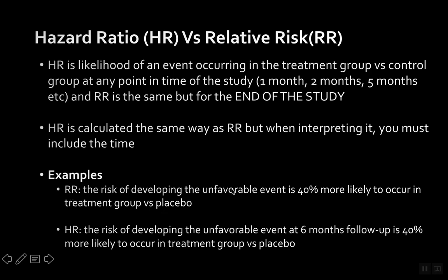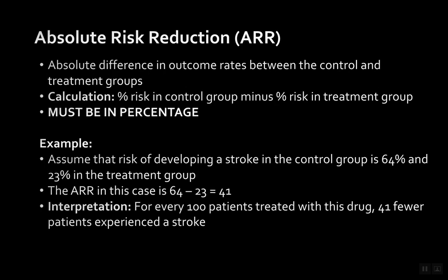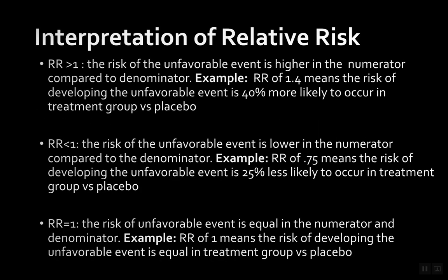The calculation is the same, but the interpretation is a little different. For relative risk: the risk of developing the unfavorable event is 40% more likely to occur in the treatment group versus placebo. For hazard ratio: the risk of developing the unfavorable event at six months follow-up is 40% more likely to occur in the treatment group versus placebo — it incorporates a specific time.